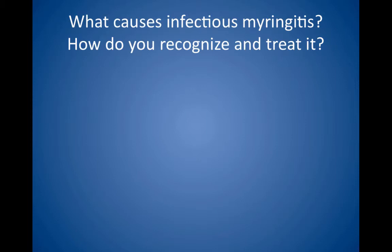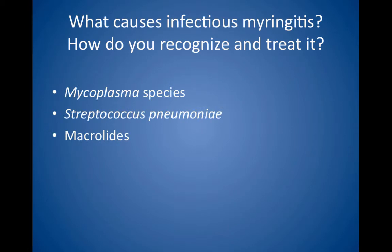What causes infectious myringitis? How do you recognize and treat it? Infectious myringitis, also known as bullous myringitis, is an inflammation of the tympanic membranes that can be diagnosed when otoscopy reveals vesicles on the tympanic membrane. Infectious myringitis is classically caused by Mycoplasma species, but Streptococcus pneumoniae or viruses may also be the culprit. Treat with erythromycin or clarithromycin to cover Mycoplasma species as well as Strep pneumoniae.